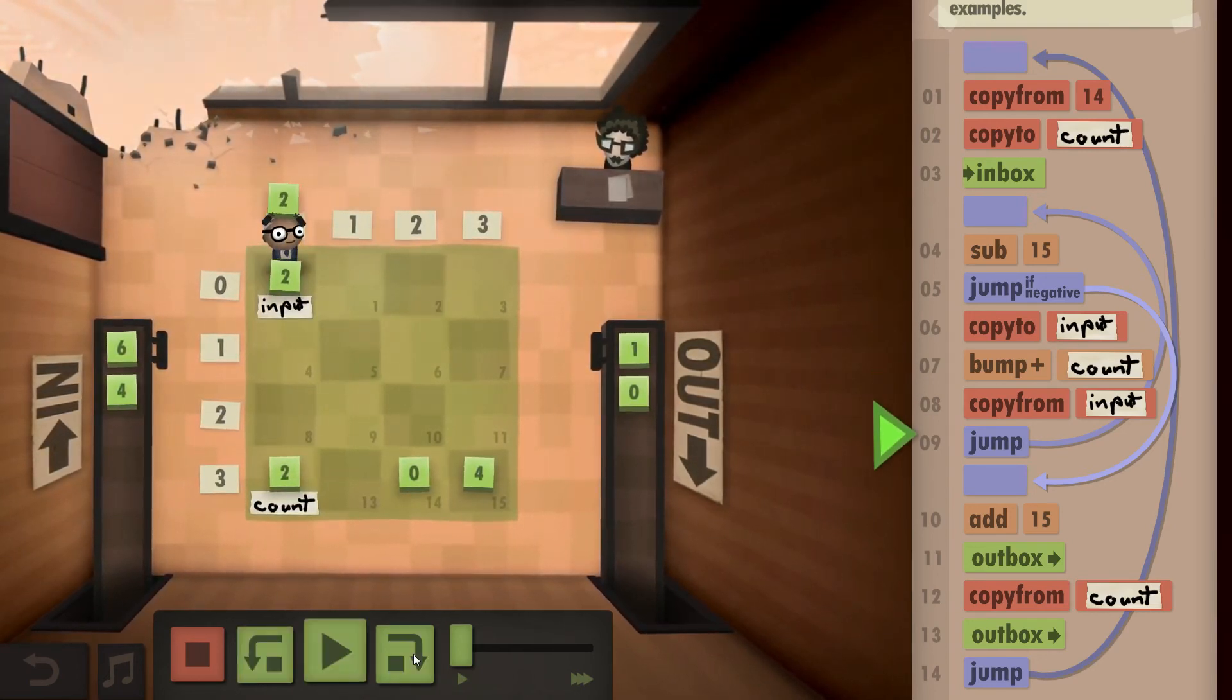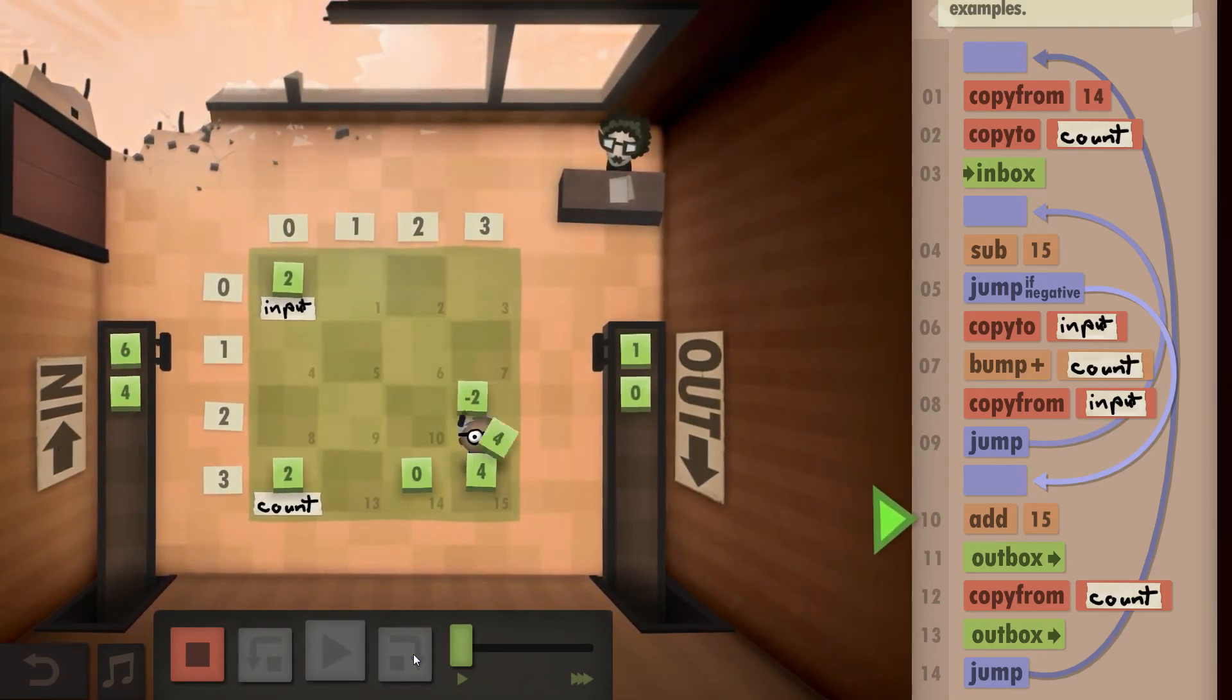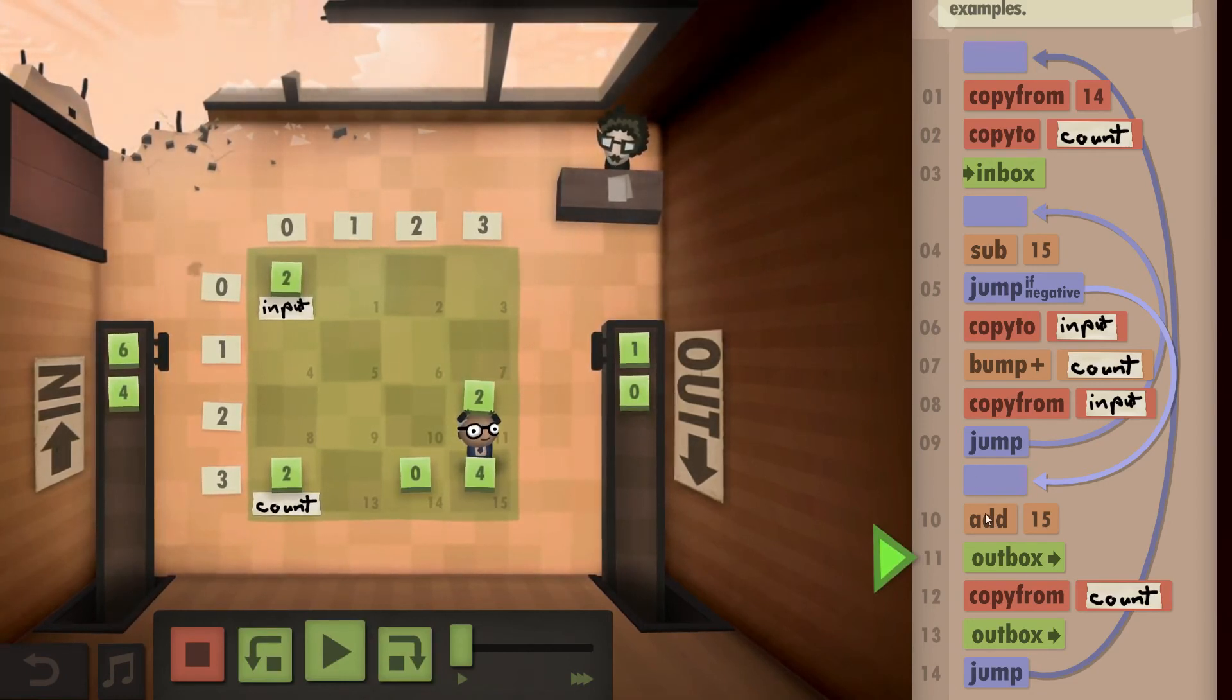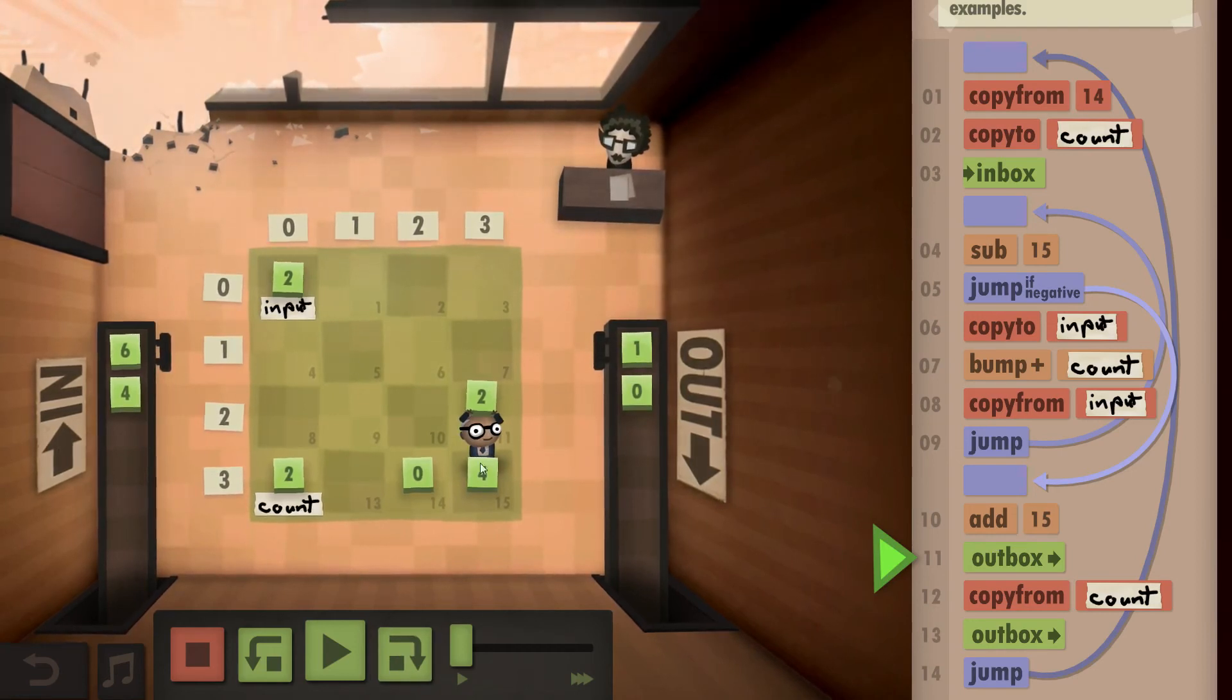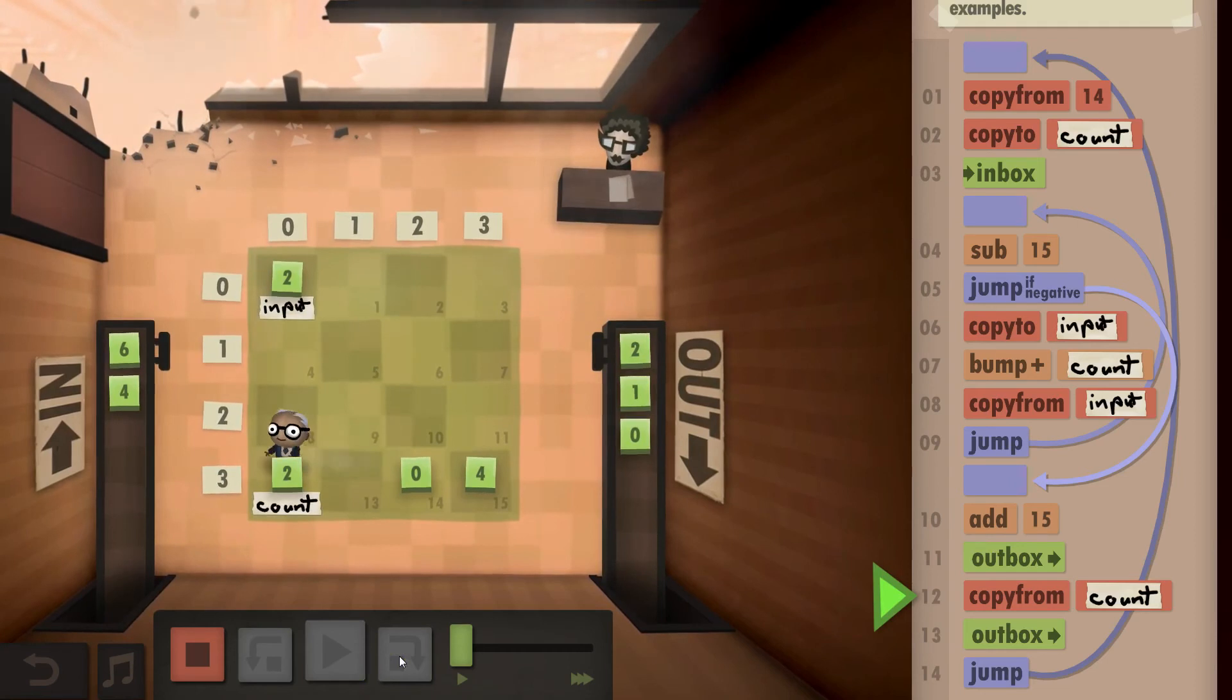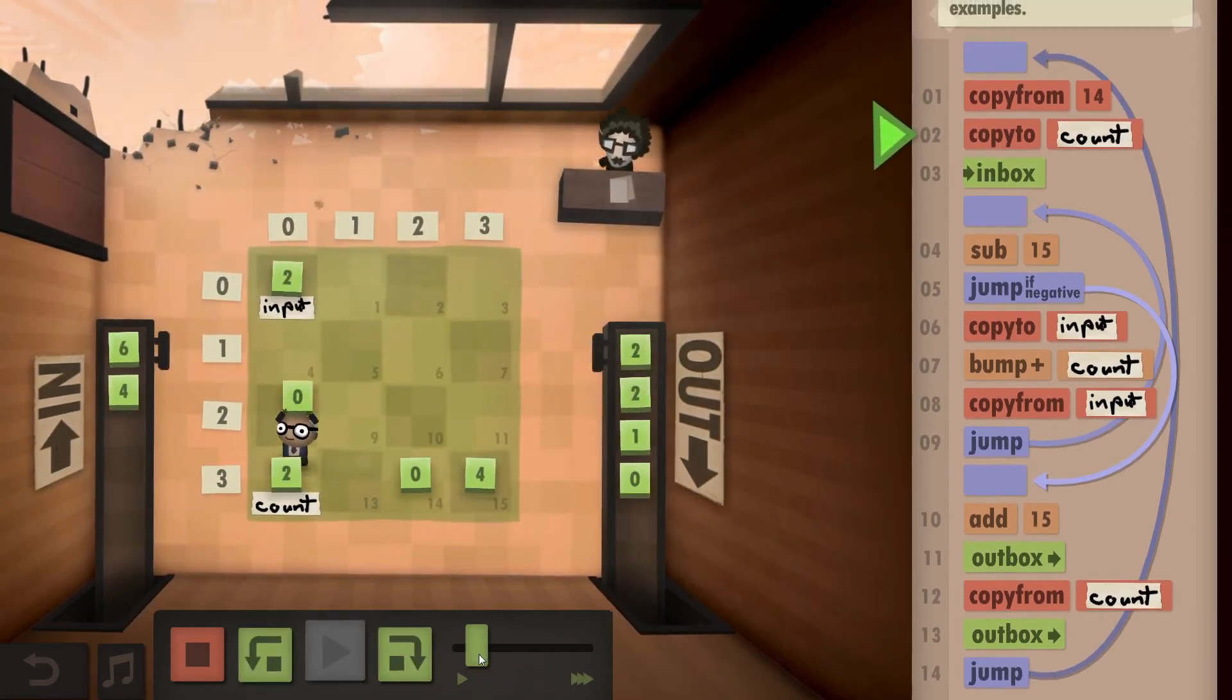Copy from the input. Subtract our 4. Hit a negative. And yeah, add again the 4 to reach our input value again. Outbox that. And then also outbox our count. And then just go on like that.